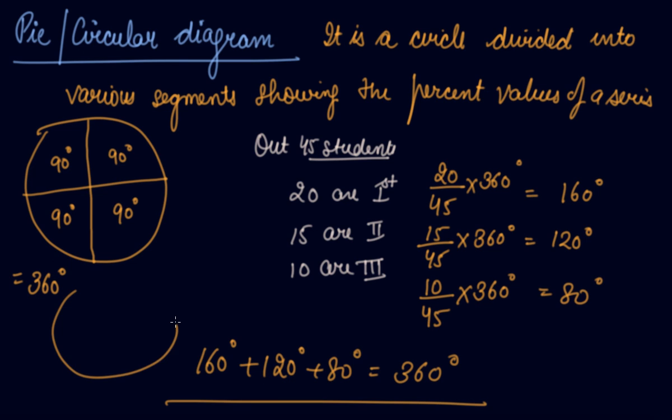With this, you can make your pie diagram with 160 degrees, then 120 degrees, then 80 degrees. This becomes your pie diagram.